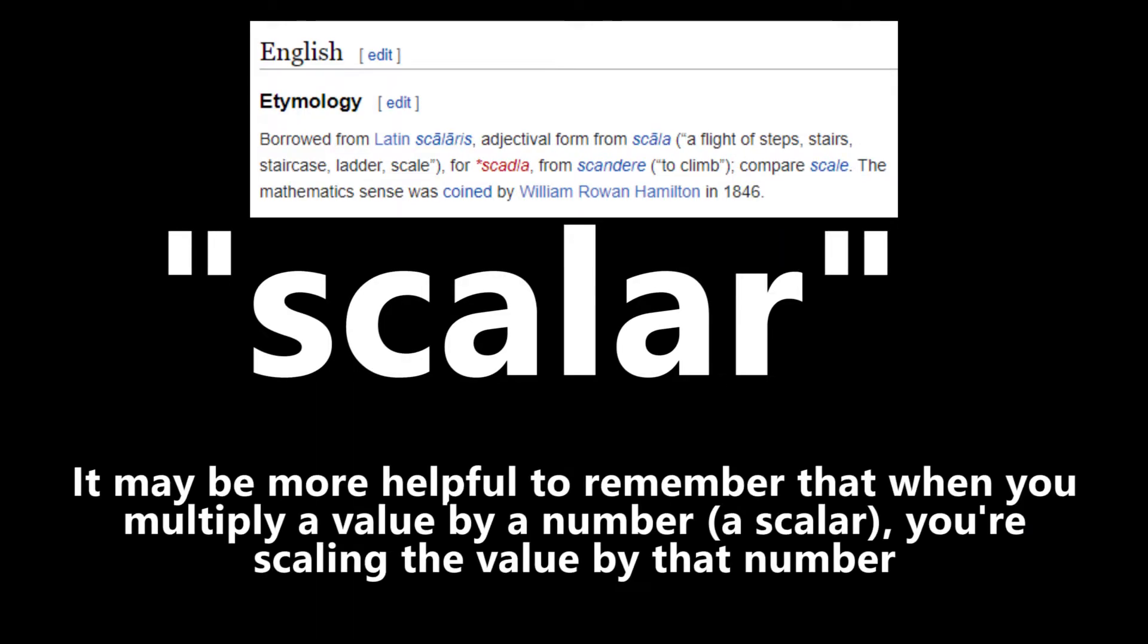This on the other hand is a vector. Specifically, it's a 2D vector. It has two components. Commonly the two components are referred to as X and Y. The numbers can represent anything. They don't have to represent any particular concept. They're just numbers. You can do whatever you want with them.